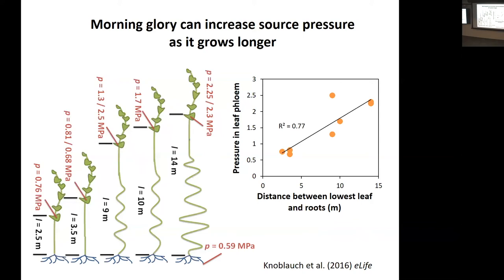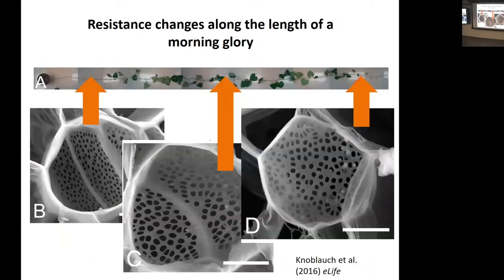But that wasn't the only difference as the plants grew taller — their anatomy also changed. Looking at the sieve plates connecting cells in the phloem, as you go from the top to the bottom of a tall plant, those plates get more and more complex, with more and larger pores, and the tubes are bigger. The anatomy of the plant is actually changing as it grows. This matters for resistance: if you want to make water move faster through a tube, make it wider. These structural changes are really important in allowing plants to transport over longer distances by decreasing resistance.